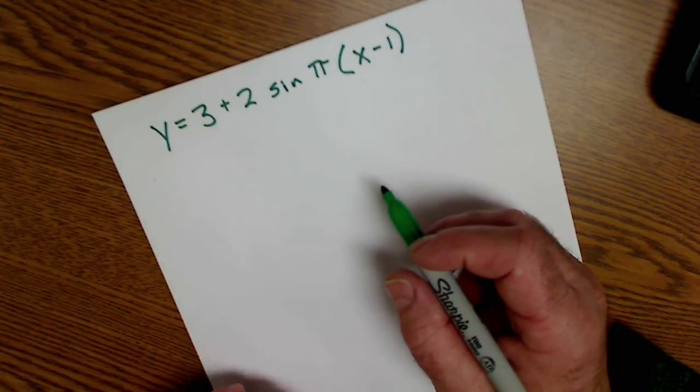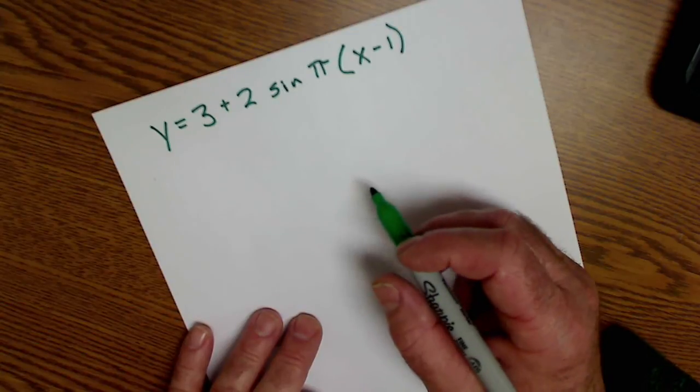Okay, this is graphing trig functions in radian measure. I have a five-step process.